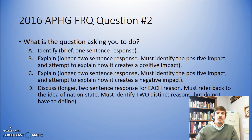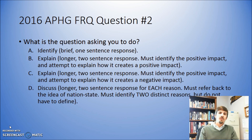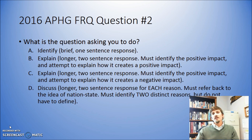Same thing with Part C. You need to identify something that you feel is negative and then explain why you think that particular element would be negative. So really you're doing two things: you're identifying, then you're explaining why the thing you've identified would either be positive or negative.